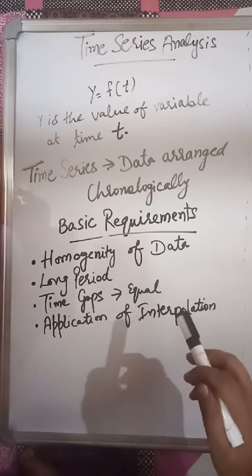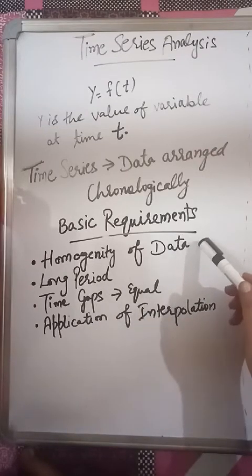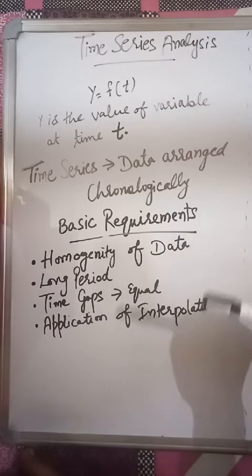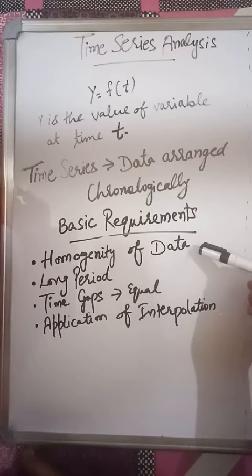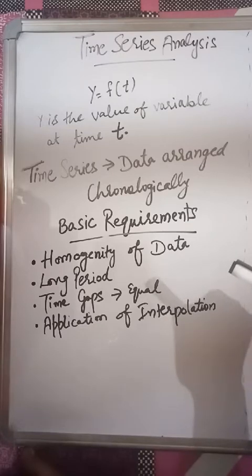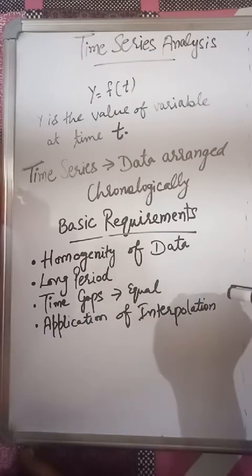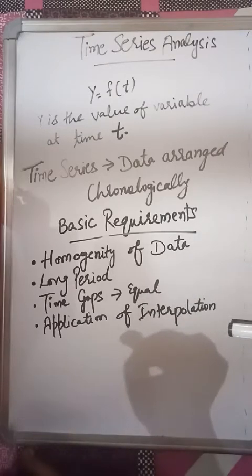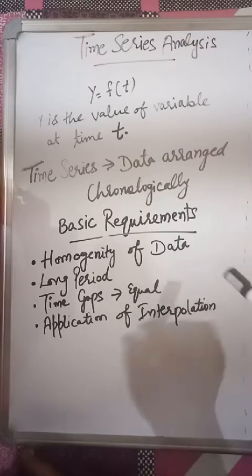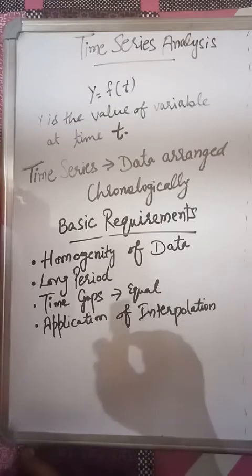When data is arranged chronologically, that means in chronological order according to time period. Time series has some basic requirements. First of all, data should be homogeneous. Homogeneous data means that the character or values should be the same. Suppose I take the example of production - if we take production in metric tons, all data should be in metric tons. Every year we should take production of wheat only, not other crops. So the phenomenon should be similar.